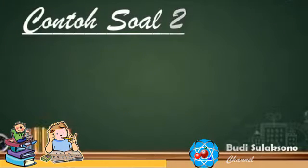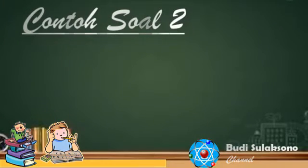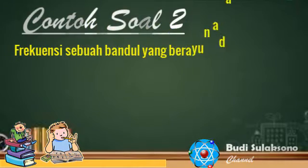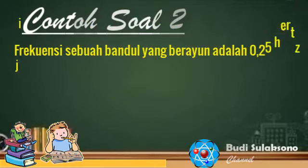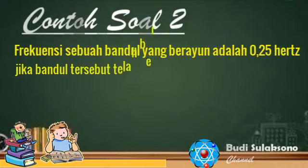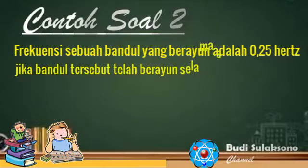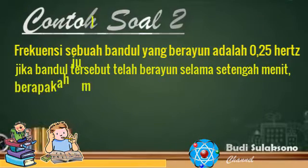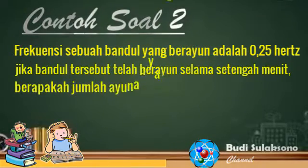Contoh soal 2. Frekuensi sebuah bandul yang berayun adalah 0,25 Hz. Jika bandul tersebut telah berayun selama setengah menit, berapakah jumlah ayunan yang terjadi?